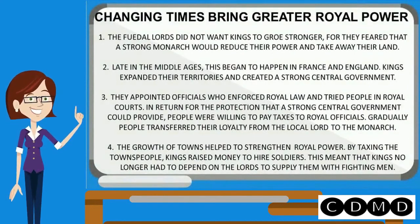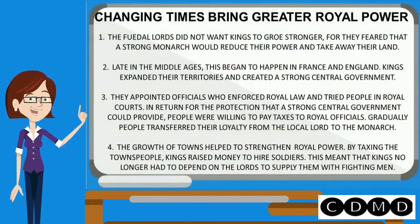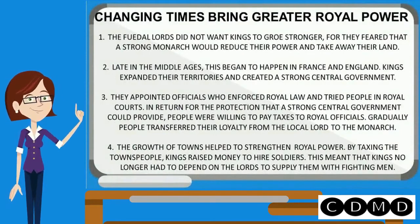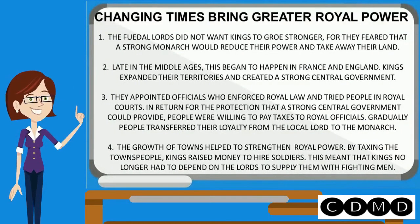Changing times bring greater royal power. The feudal lords did not want kings to grow stronger, for they feared that a strong monarch would reduce their power and take away their land. Late in the Middle Ages, this began to happen in France and England, as kings expanded their territories and created strong central governments.